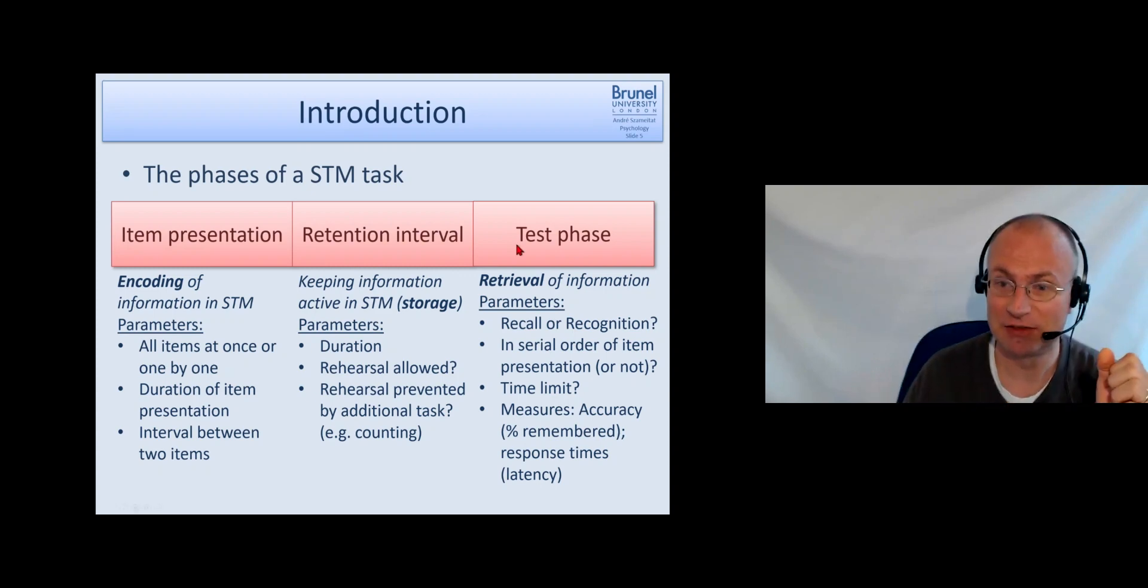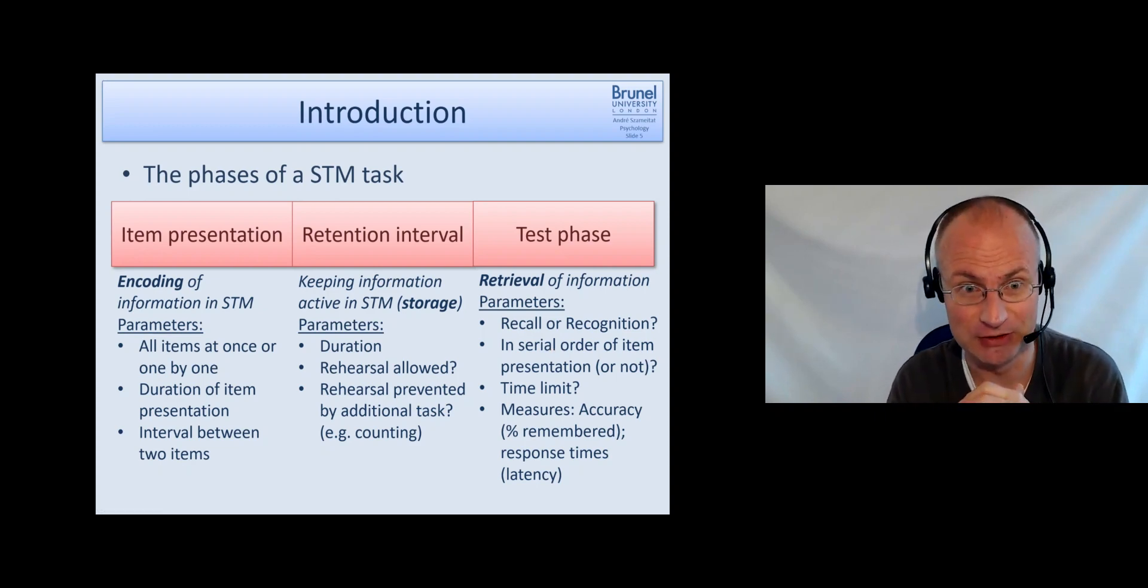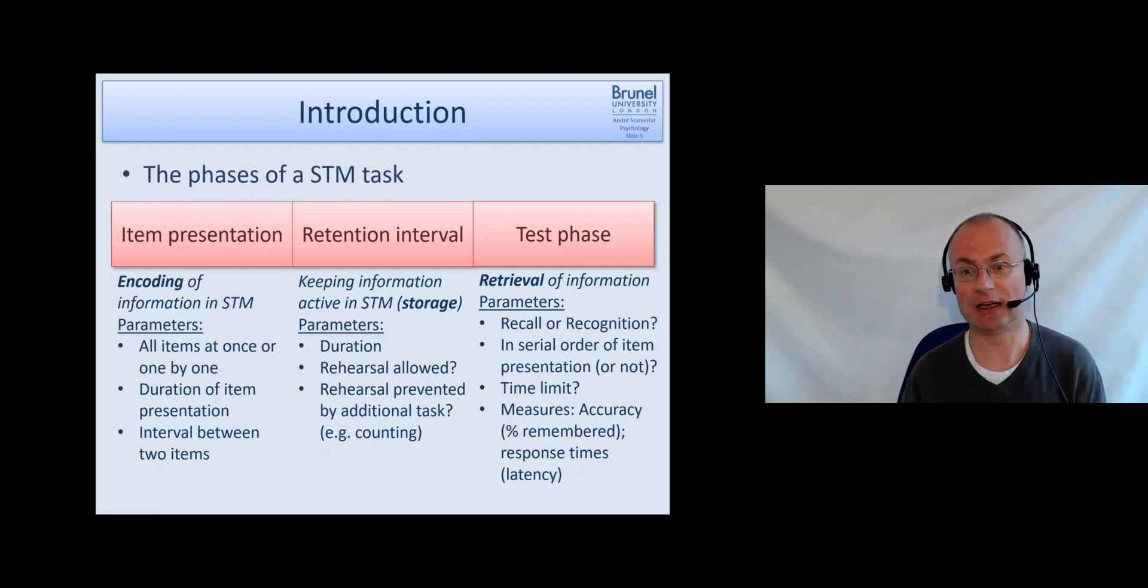Another thing you can vary: suppose you present ten words, you can request that they are recalled in the exact order you presented them, or you can say write it down in any order you wish. Of course, in serial order is more difficult. This is more linked to working memory usually, because it requires you to also retrieve the sequential information of the words. Is there a time limit? How much time do participants have to retrieve the information? As measures, we can take the accuracy, which is probably the most common one - how many percent did they recall correctly. Or, in particular if we do recognition tasks at a computer where they have to say yes/no to each word, we can also take the response times.